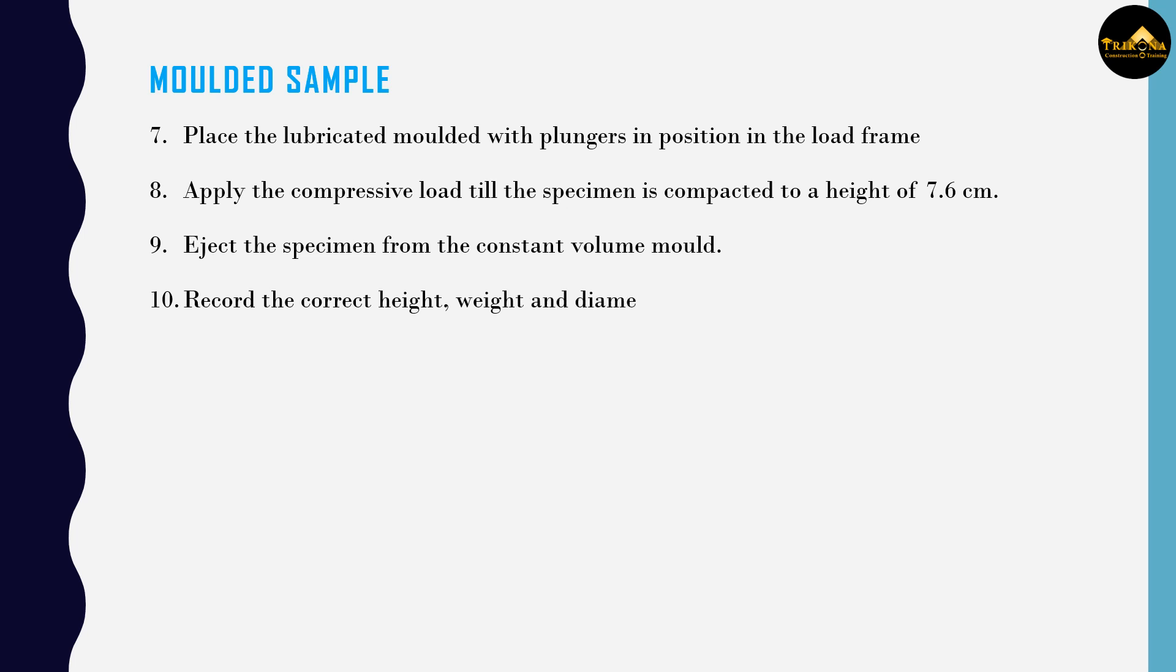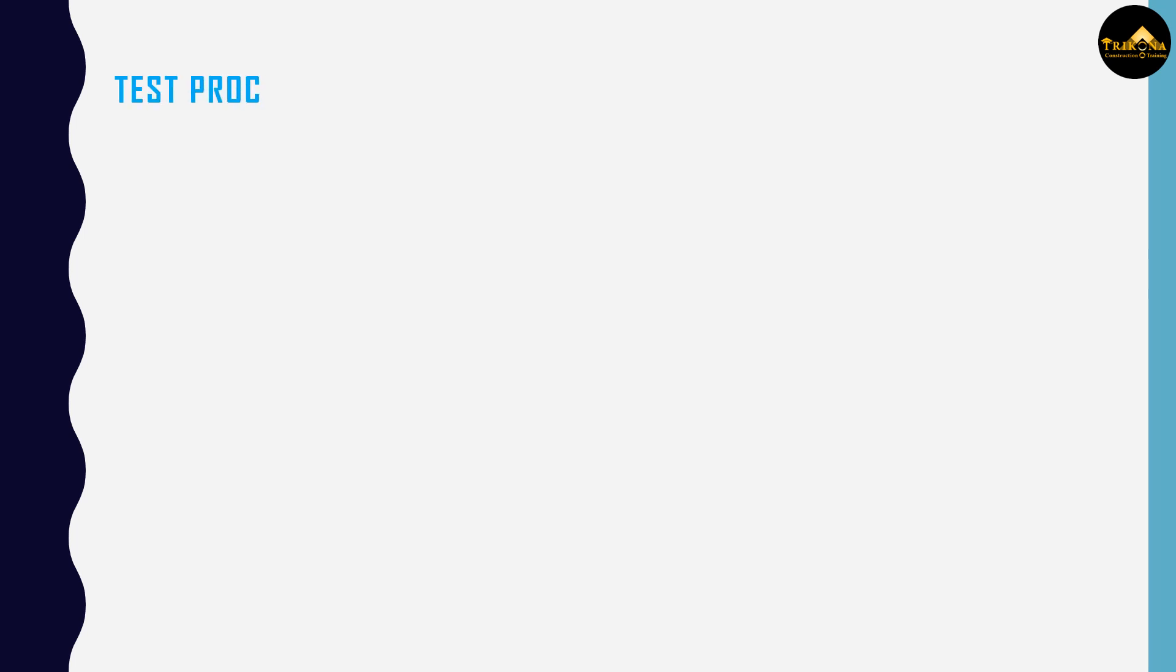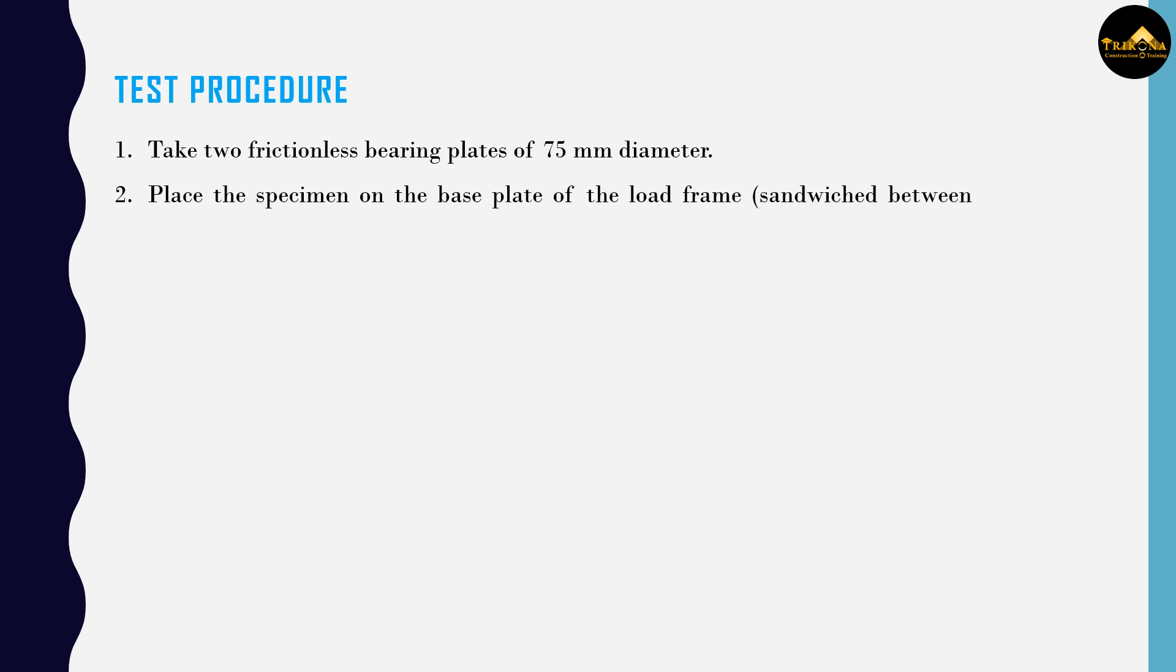Test procedure: Take two frictionless bearing plates of 75 mm diameter. Place the specimen on the base plate of the load frame sandwiched between the end plates. Place a hardened steel ball on the bearing plate. Adjust the centerline of the specimen such that the proving ring and the steel ball are in the same line.